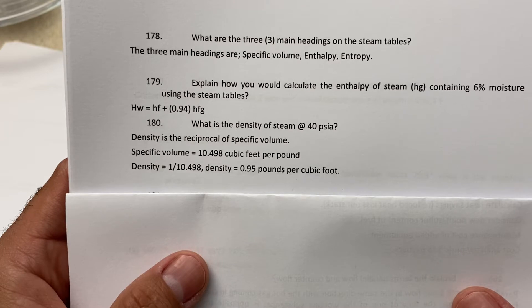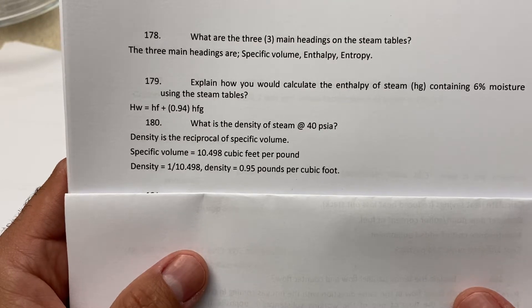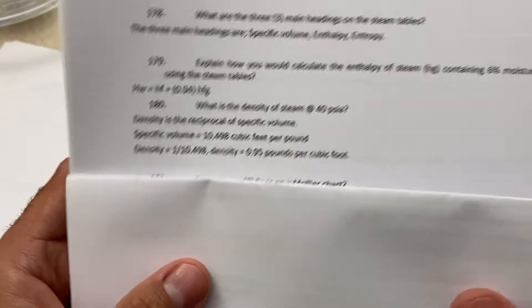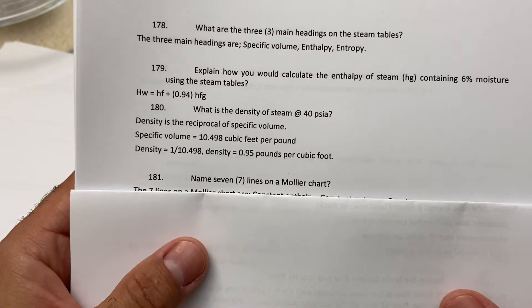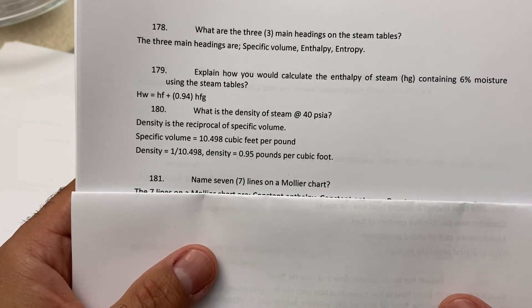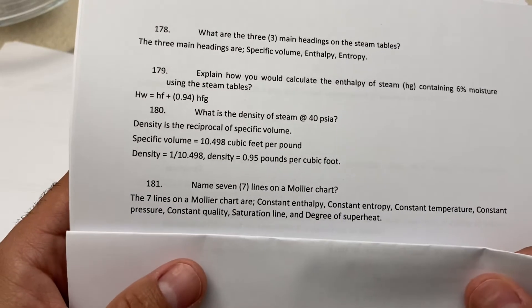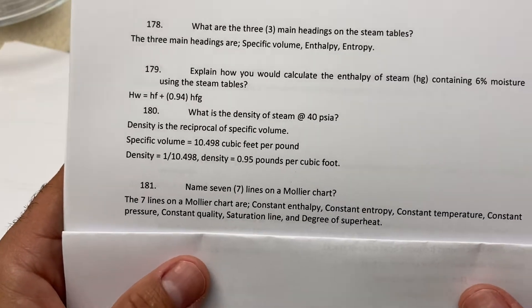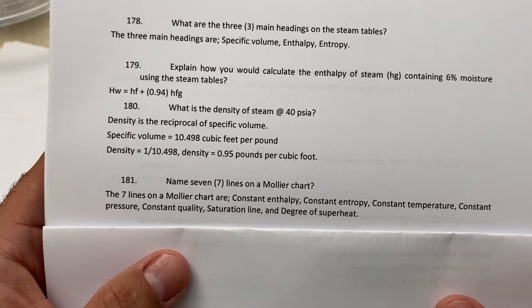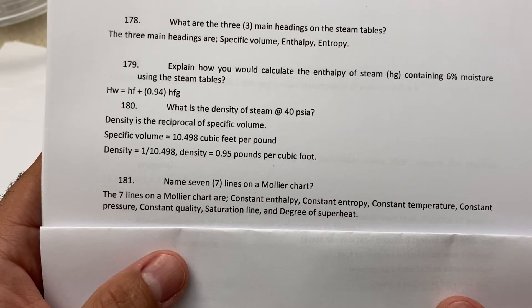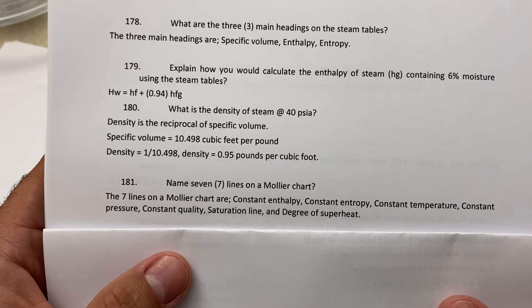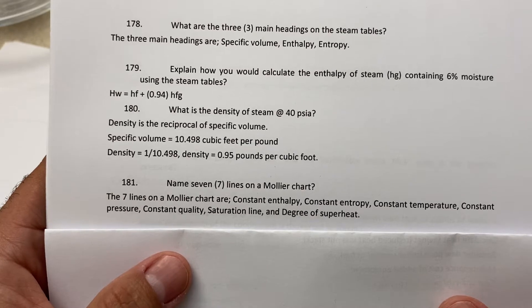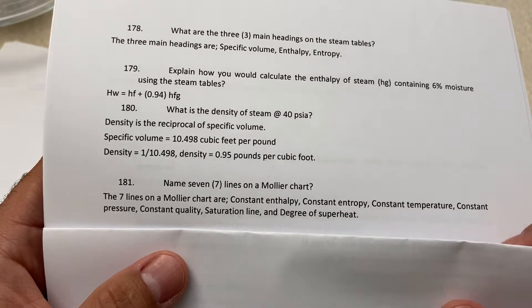The density equals 0.095 pounds per cubic foot. Name seven lines on the Mollier chart: constant enthalpy, constant entropy, constant temperature, constant pressure, constant quality, the saturation line, and degree of superheat.